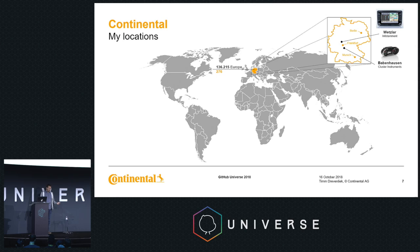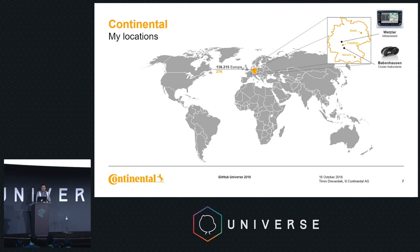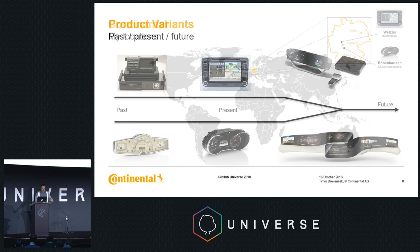Wetzlar is mainly infotainment — classical radios, infotainment systems, and navigation. Technically, we deal with Linux and Android systems built for radios and navigation. The second location I travel to is Babenhausen, which makes cluster instruments — the devices we hope prevent you from driving into a speed trap. Inside those devices we deal mostly with real-time operating systems and safety aspects. We also do head-up displays, interior camera systems detecting how you behave and feel while driving.